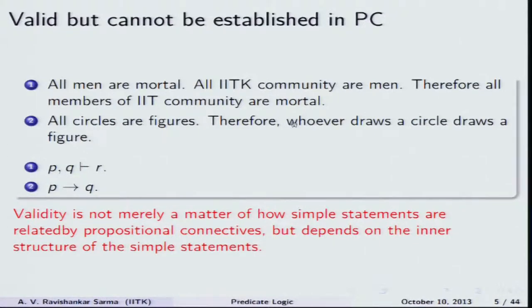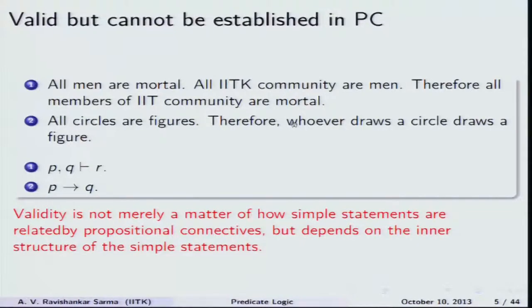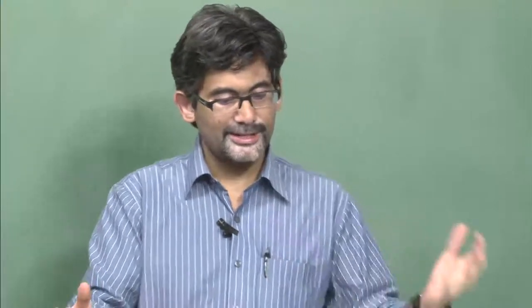Consider the famous example: 'All men are mortal; all IITK community are men; therefore all members of IITK community are mortal.' If we represent this in propositional logic, 'all men are mortal' is represented as P, 'all IITK community are men' is represented as Q, and 'all members of IITK community are mortal' is represented as R. From P and Q, R should follow — but we can easily come up with a counterexample in which P and Q are true but R is false. The argument appears invalid if we do not look into the deep structure of these sentences.